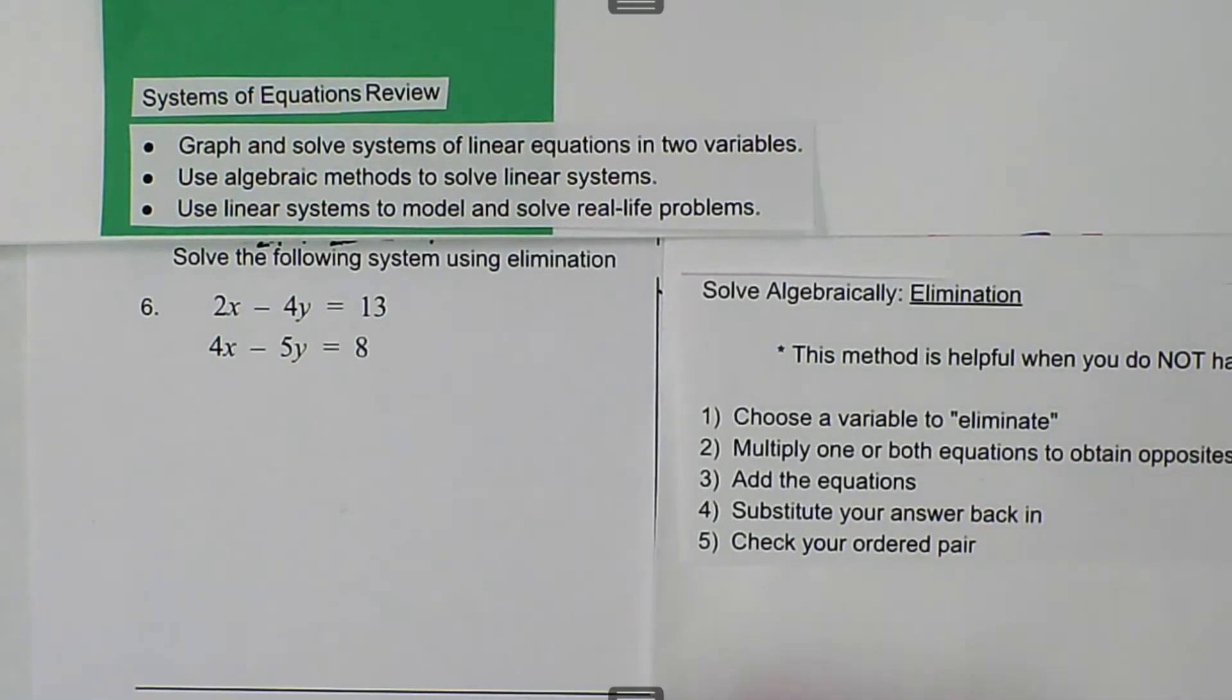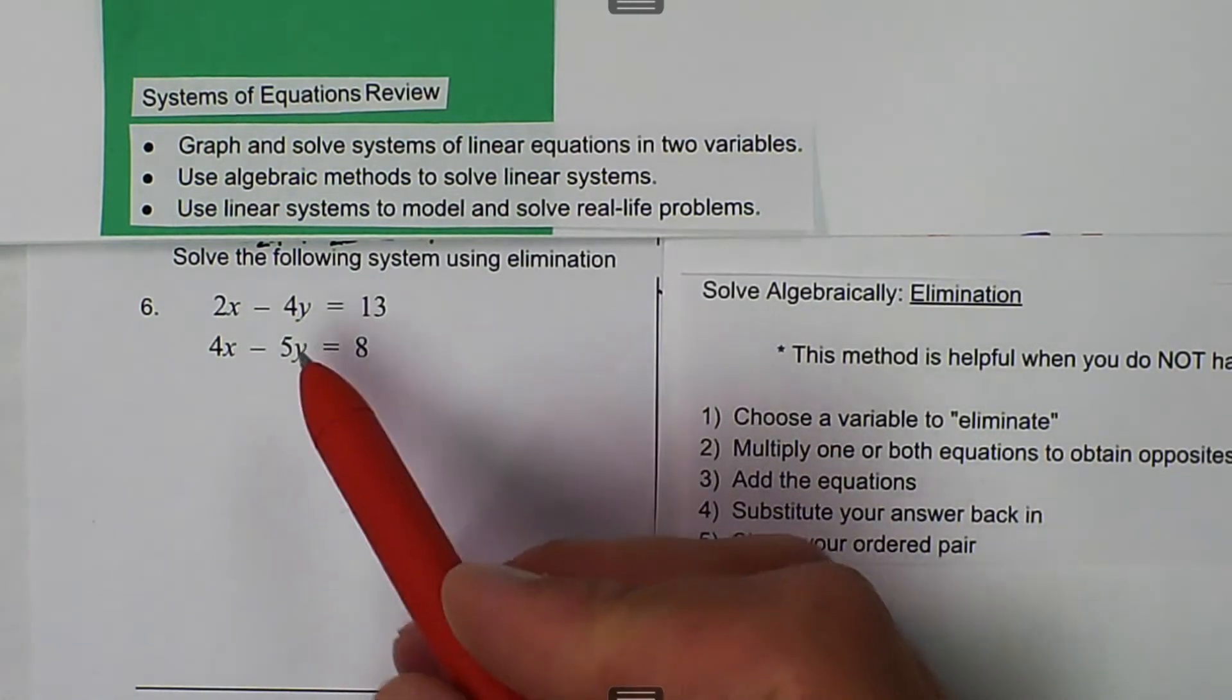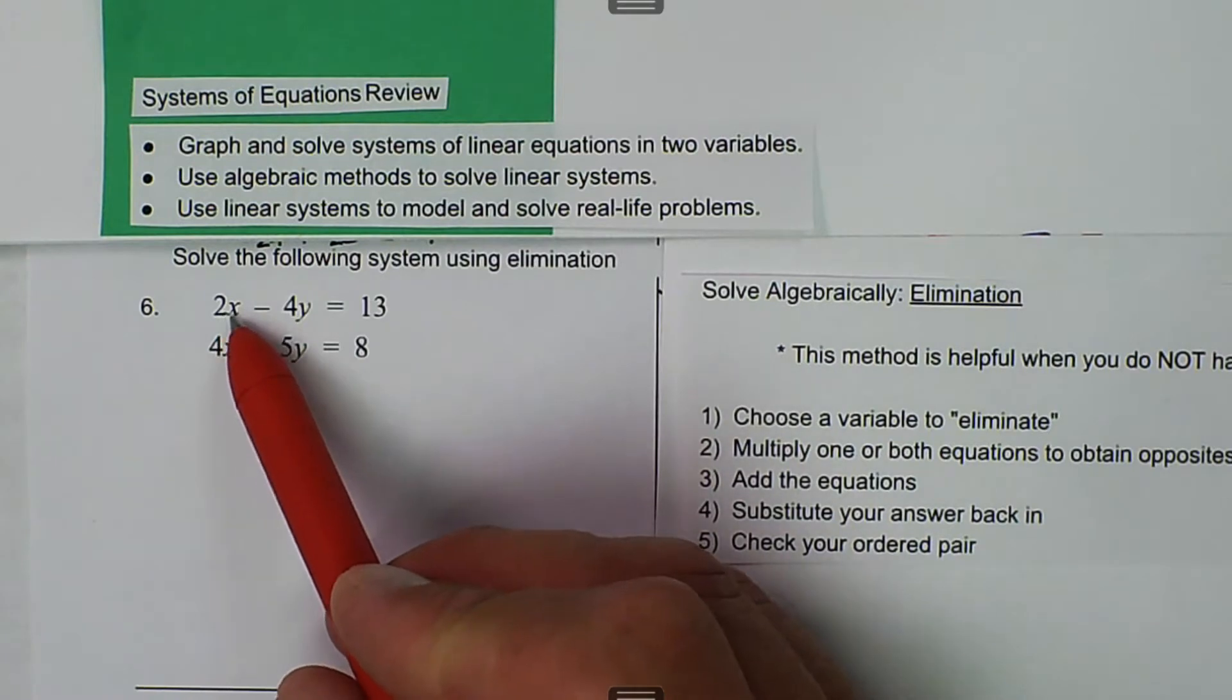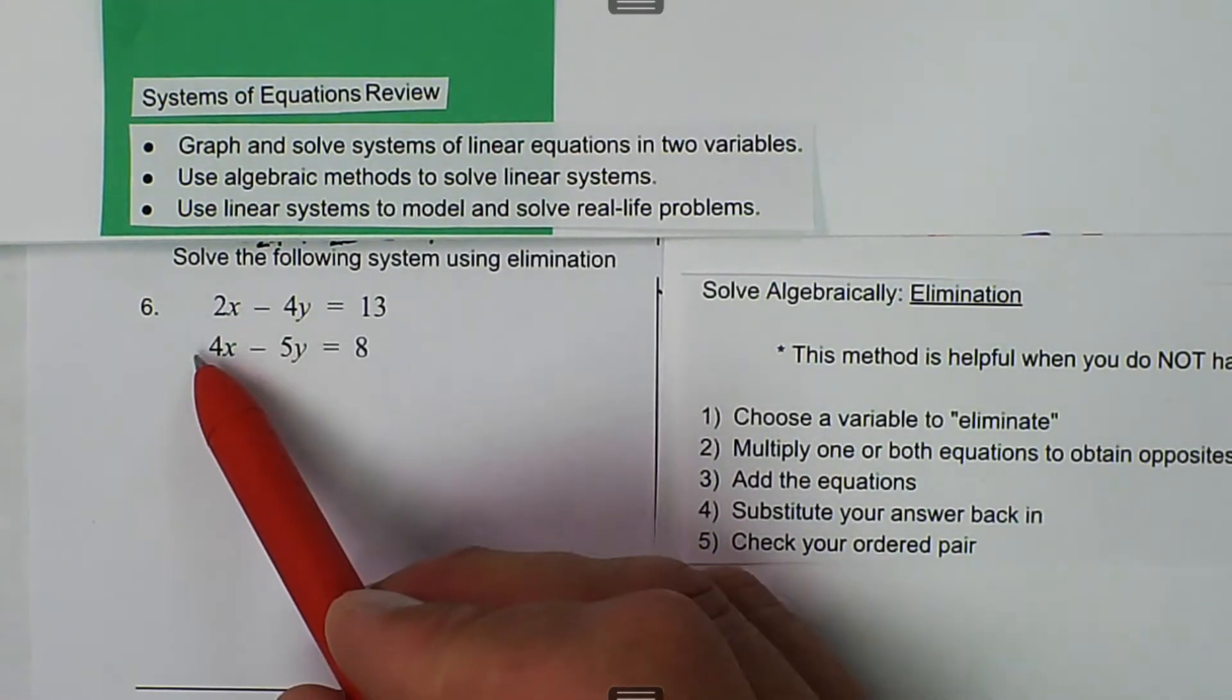So here, if we look, which one's going to be the easiest? We have a 2x and a 4x. I know that those are multiples of 2, so that would work.